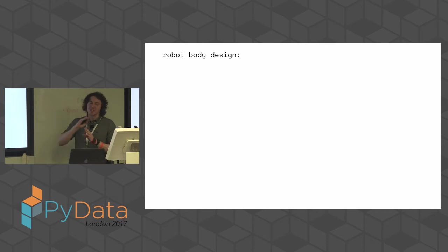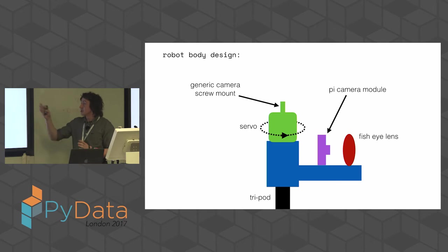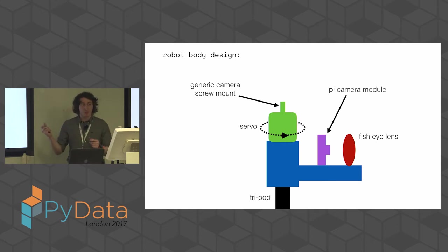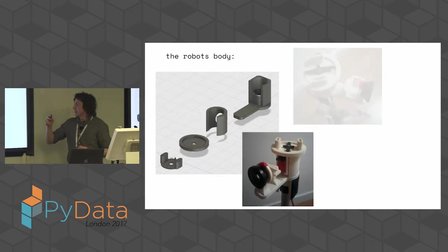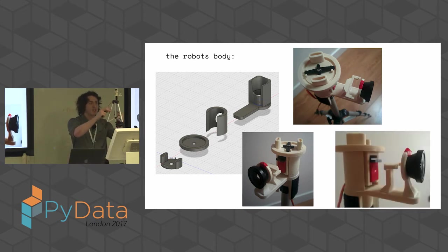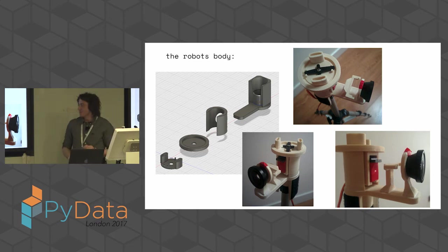For the robot design — I'll whiz through this as it's out of scope — you've got a tripod, some plastic body, the Pi Camera mounted there with a fisheye lens to capture everything, a servo on top, and on top of the servo a generic camera mount so I could mount any camcorder. Instead of building a robot that records, I'm just building a robot that points. I put on my 3D printing hat, designed some stuff, and 3D printed it all. It's literally just a case with the servo and a platform on top where the camera goes — designed purely for functionality.